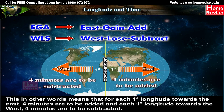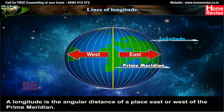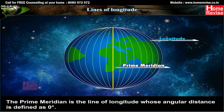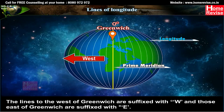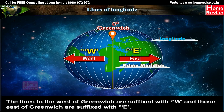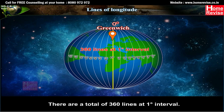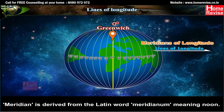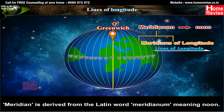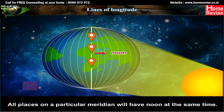Lines of Longitude: A longitude is the angular distance of a place east or west of the prime meridian. The prime meridian is the line of longitude defined as 0 degrees, passing through Greenwich near London. Lines to the west of Greenwich are suffixed with W and those to the east with E — for example, 60 degrees west and 60 degrees east. There are a total of 360 lines at 1-degree intervals. Lines of longitude are also called meridians, derived from the Latin word meridianum meaning noon, as the sun crosses a meridian at noon. All places on a particular meridian will have noon at the same time.